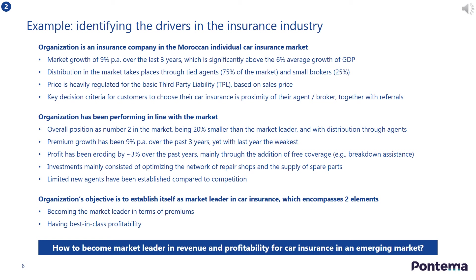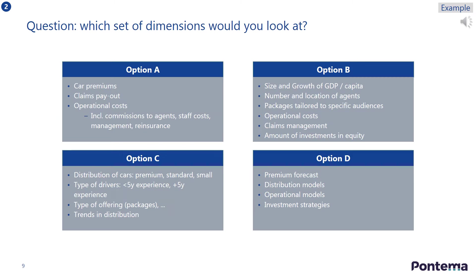Now let's take a closer look at the insurance industry to help us frame a problem and identify the drivers that will answer the key question. Consider the market context as shown in the slide, and take some time to reflect on the key question management is grappling with, which is how to become the market leader in revenue and profit for car insurance in an emerging market. Given the market context and the goal of the organisation to become market leader, which set of dimensions would you look at to frame the problem and be MECE? Take some time to reflect on the options presented in the slide.